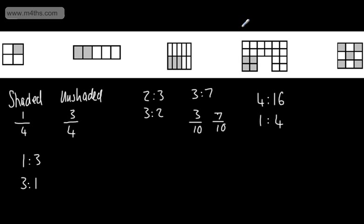And if we look at that now, we can see that for every shaded square I have four unshaded squares. So what I've looked to do is simplify this ratio into its lowest form. So it is a four to sixteen ratio, but we can write it as one to four — that's shaded to unshaded. Unshaded to shaded would be a four to one ratio, so for every four unshaded we have one shaded.